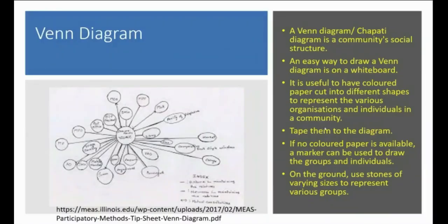A Venn diagram or Seppathi diagram represents community social structure. An easy way to draw it is on a whiteboard. It is useful to have colored paper cut into different shapes to represent various groups and individuals in the village. If no colored paper is available, a marker can be used to draw the groups and individuals. On the ground, stones of varying size can be used to represent various groups — this is optional for literate groups. In every case — village mapping, wealth ranking, all the cases — we should write the name of who prepared the material, because we did not produce it ourselves. It is a production of a group, so due acknowledgement should be given to those contributors.